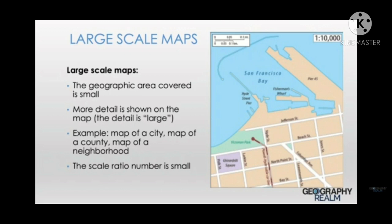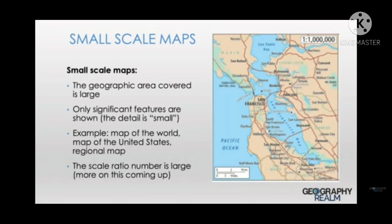Large scale maps: the geographic area covered is small, more detail is shown on the map. Examples include a map of a city, map of a country, and map of a neighborhood. The scaled ratio number is small. Small scale maps: the geographic area covered is large, and only significant features are shown. Examples include a map of the world, a map of a country like India, and regional maps.